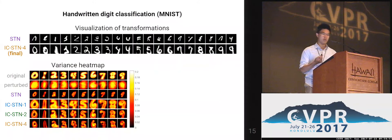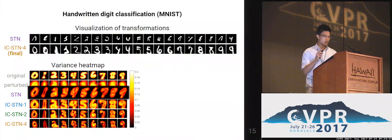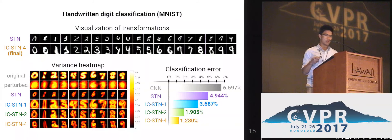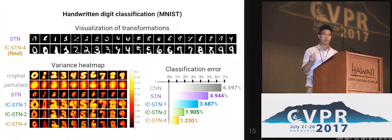We can also see the STN variance is not as hollow as the ICSTN variance. Looking at the classification error, there is a benefit from trading alignment capacity for classification capacity. Furthermore, since ICSTN eliminates the boundary effect, it is able to achieve better classification error. And if learned with more recurrent transformations, it is able to push the performance even further.